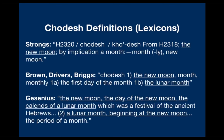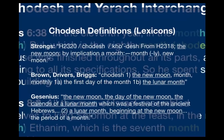Scholars determine word definitions based on how a word is used in an ancient language — looking at all usages in scripture and also in other Hebrew, Greek, and Aramaic literature. There is no Hebrew lexicon or dictionary that I'm aware of that ties the word hodesh to the sun or a solar month. It is always tied to a lunar month.